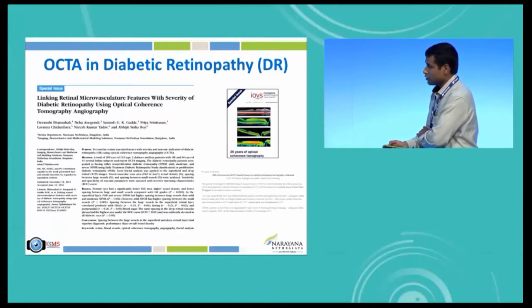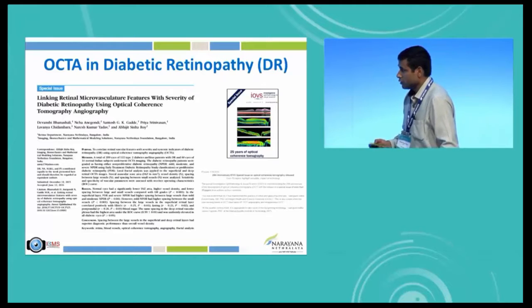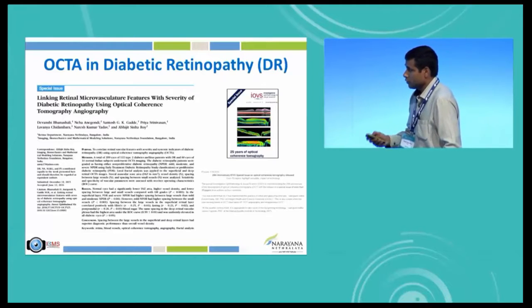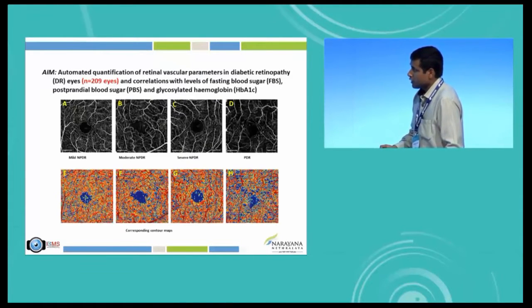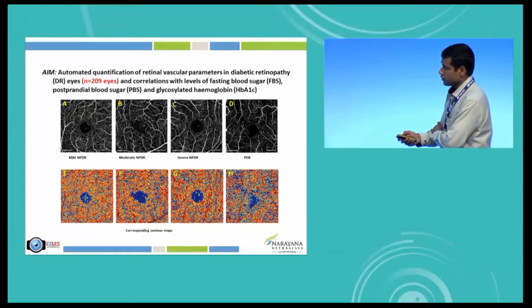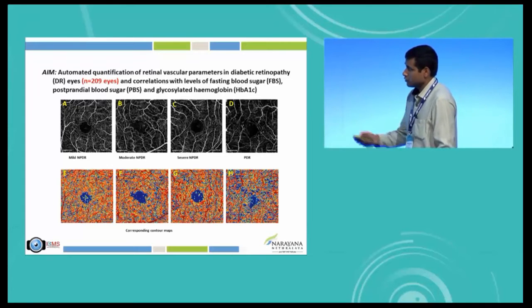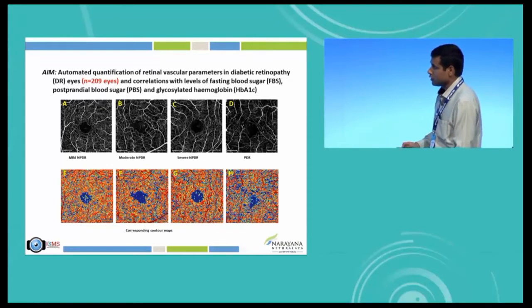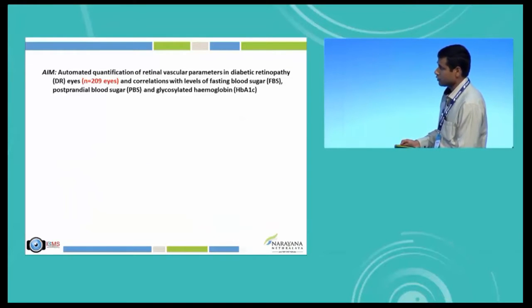We have also looked at patients who had diabetic retinopathy, and in these eyes as well, by utilizing this technique, we can accurately quantify the vascular density and the spacing between the vessels. It can be converted into a color-coded map to quantify these features very specifically. This is a case example of different eyes with different grades of diabetic retinopathy.